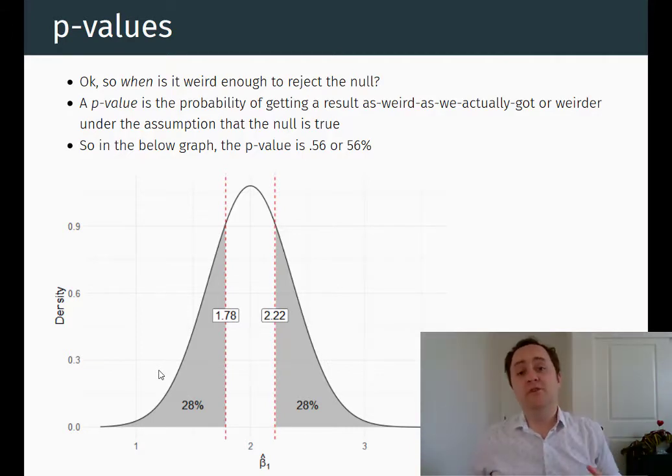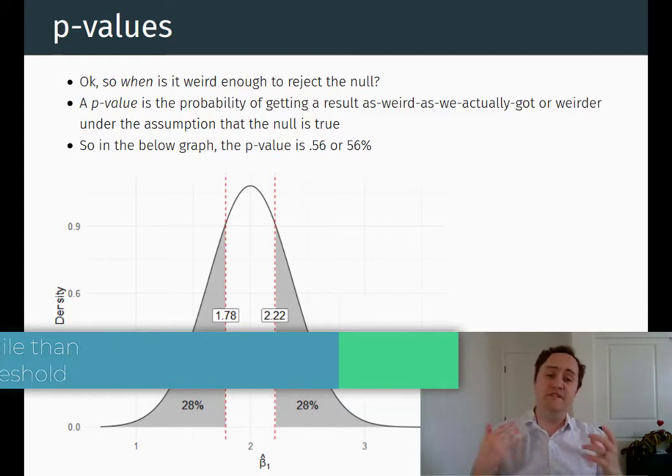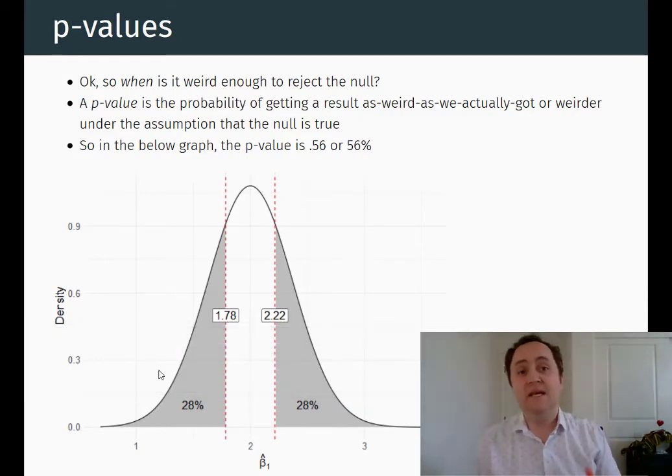I would recommend getting used to that concept of rejecting a null if the p-value is below a certain threshold, but also don't take it too seriously. And also don't get too wrapped up in whether you reject the null precisely or not below a specific threshold, because it is pretty arbitrary. Keeping that in mind, let's go in a different direction to looking at the sampling distribution and the uncertainty of our estimate, which is just to characterize that sampling distribution ourselves. So instead of focusing on whether we can reject a particular null or not, let's talk about what the sampling distribution is. And this brings us to the concept of standard errors and confidence intervals.